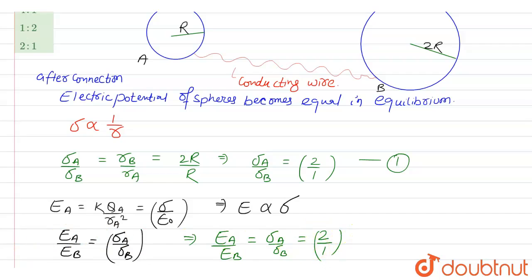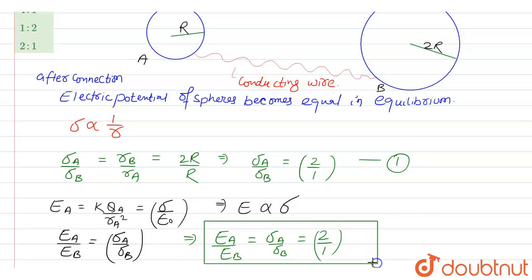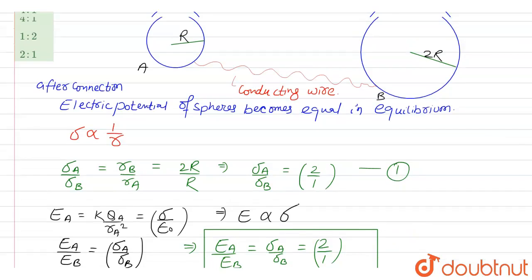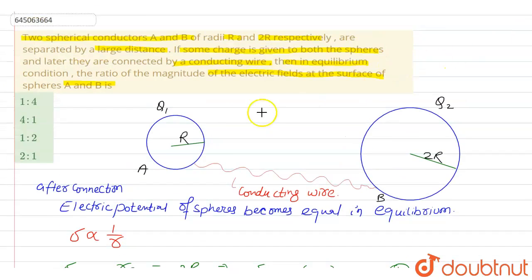So the ratio of electric field at the surface of sphere A to the surface of sphere B is 2 is to 1. Looking at the options given in the question, the ratio of electric field at sphere A to sphere B comes to be 2:1. So the fourth option is our correct option. I hope you are able to understand the problem. Thank you for watching.